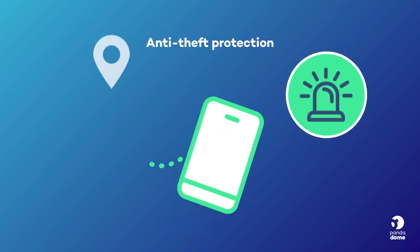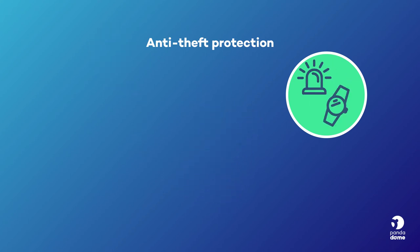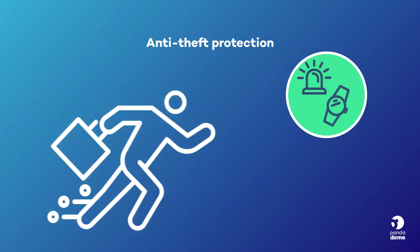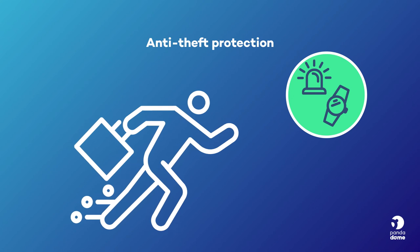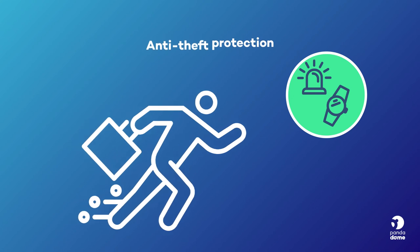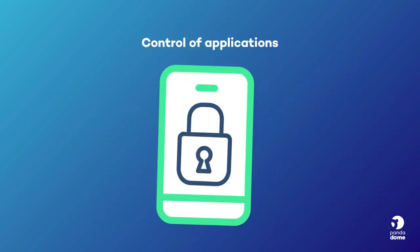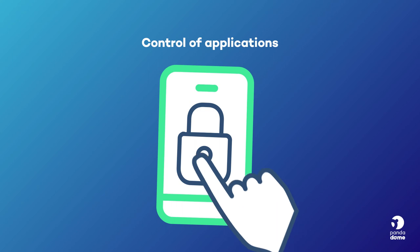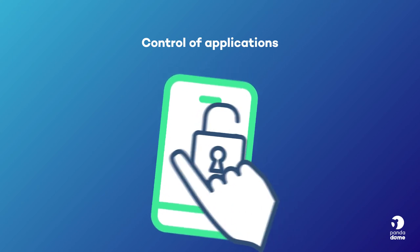Motion alarm for your device: a remote alarm you can activate from the internet or from your smartwatch in the event of loss or theft. Control of applications: protect access to your apps through a PIN.